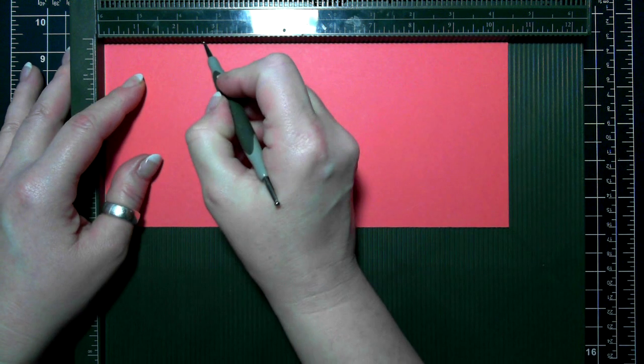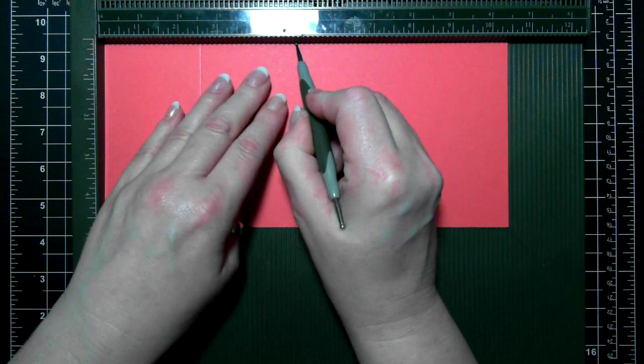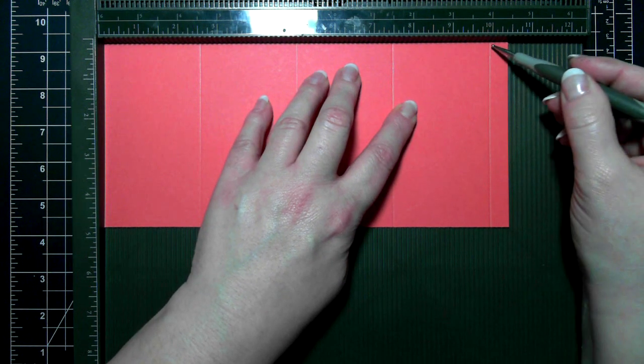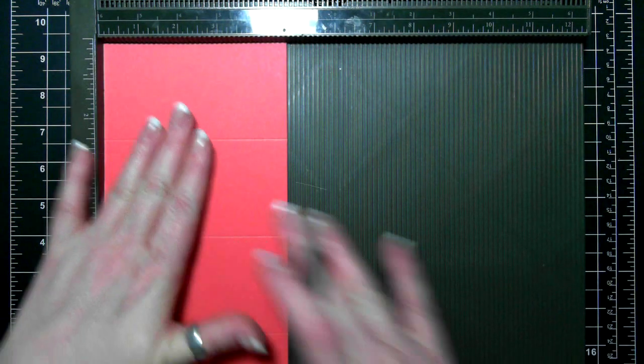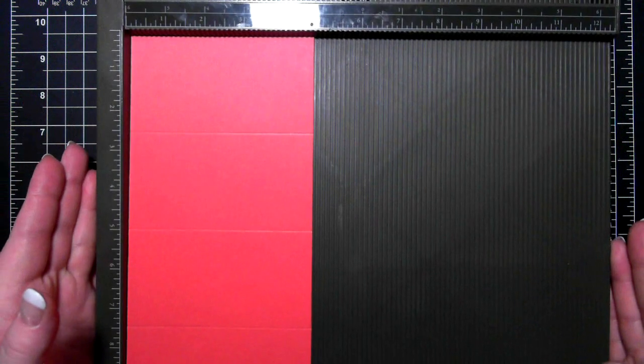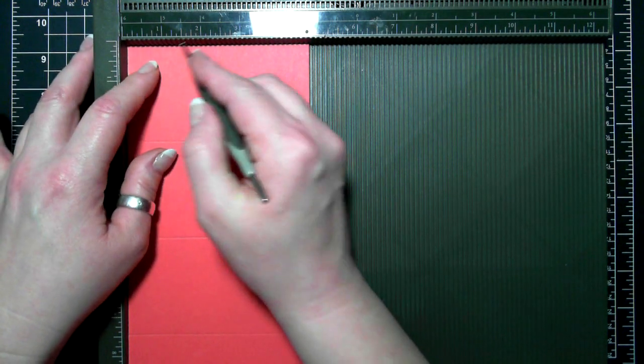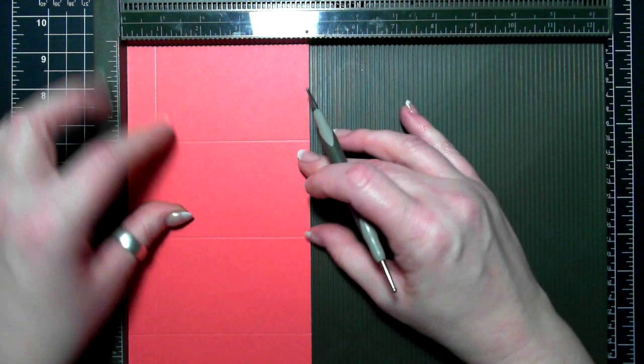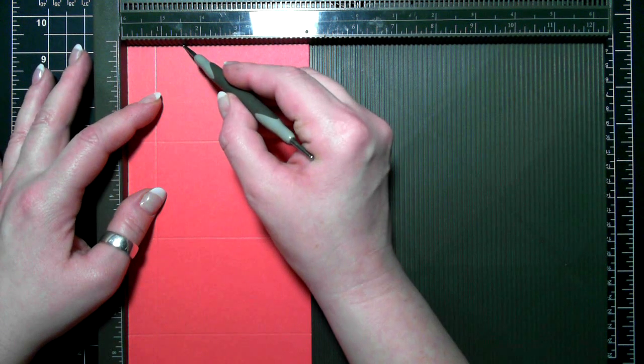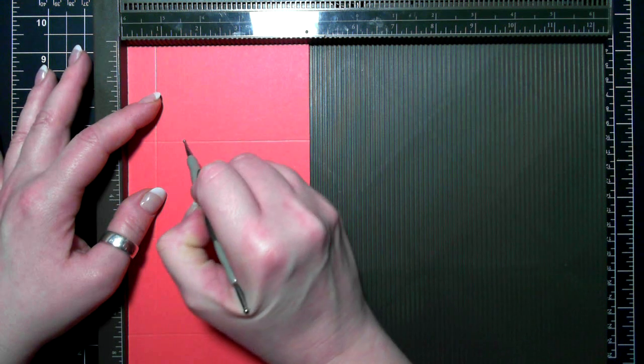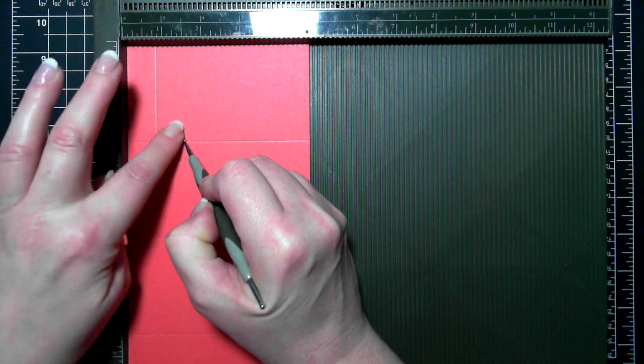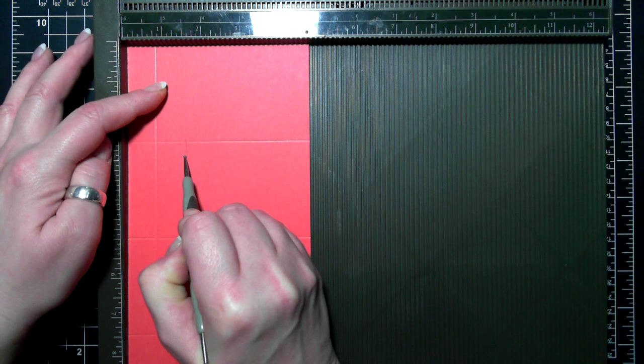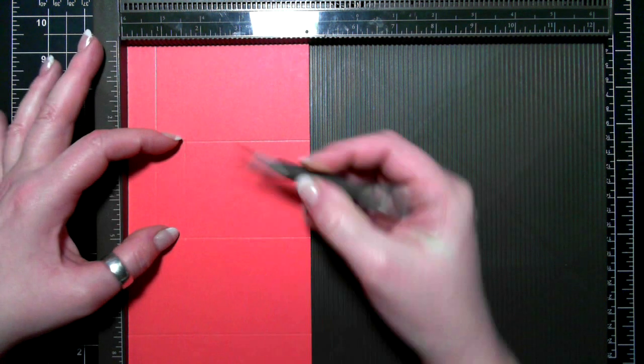So for the long side, we're going to be scoring at 2 and a half, 5, 7 and a half, and 10. This bottom score I'm going to put to the bottom, so it's over here. And then I'm going to score on my short side at three quarters of an inch. And then on this second rectangle, I'm going to score at about 1 and a half. I'm just going to sort of drag my stylus across that one. I'm just sort of feeling the groove. I'm going to score from here to here.